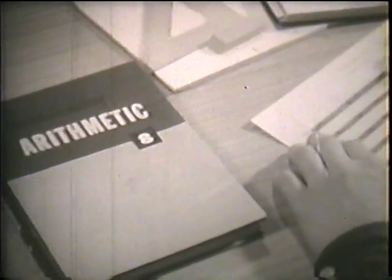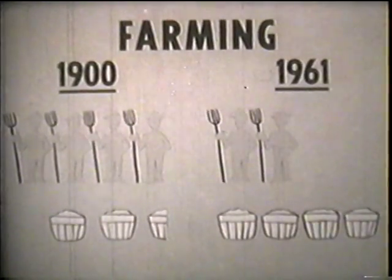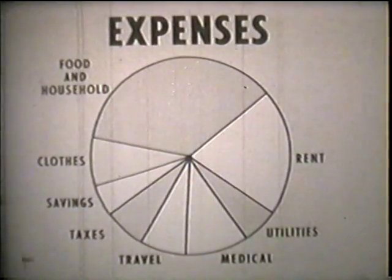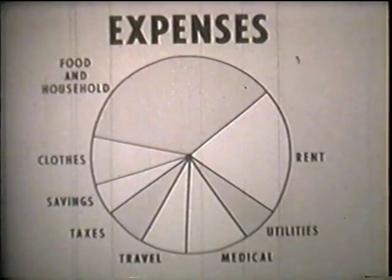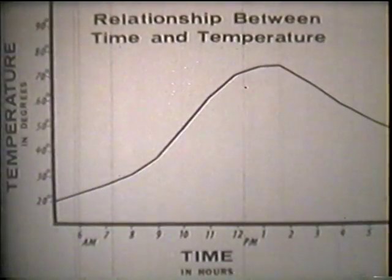From our study of arithmetic, we know that many problems can be solved with the help of graphs called statistical graphs. Statistical graphs include bar graphs, pictographs, circle graphs, and line graphs.